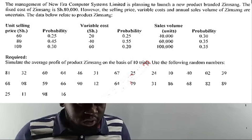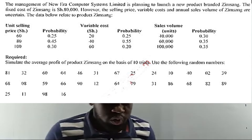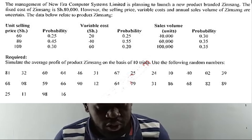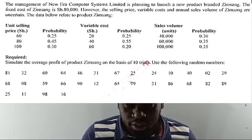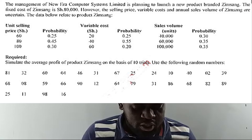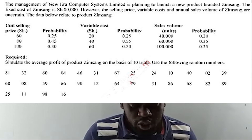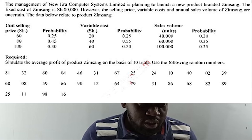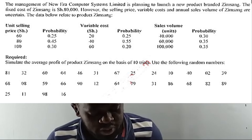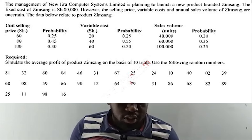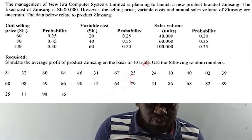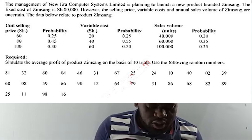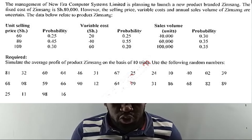December 2017, question 3d: The management of New Era Computer System Limited is planning to launch a new product branded Zimson. The fixed cost of Zimson is 80,000 shillings. The selling price, variable costs, and annual sales volume are uncertain. The unit selling price can be 60, 80, or 100 shillings with probabilities 0.25, 0.45, and 0.30 respectively.